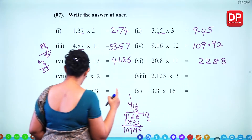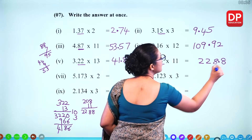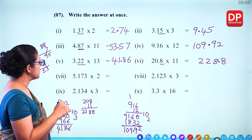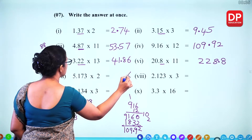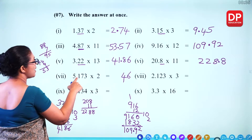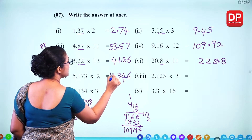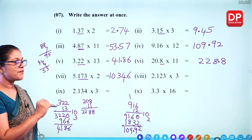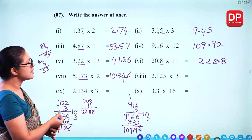For 20.8 times 11: 208 multiplied by 11 — 11 times 8 is 88, 11 times 2 is 22 — giving 2288. With 1 decimal place, the answer is 228.8. For 5.173 times 2: 2 times 3 is 6, 2 times 7 is 14 (1 remaining), 2 times 1 plus 1 is 3, 2 times 5 is 10 — giving 10346. With 3 decimal places, the answer is 10.346.